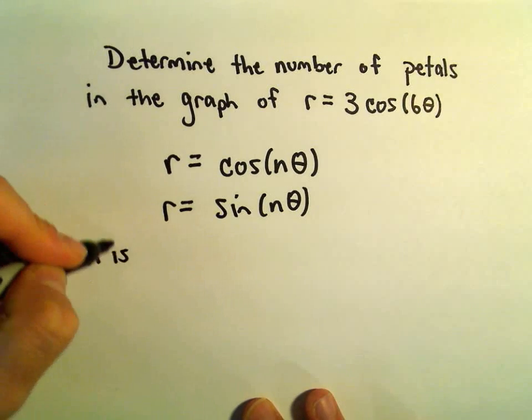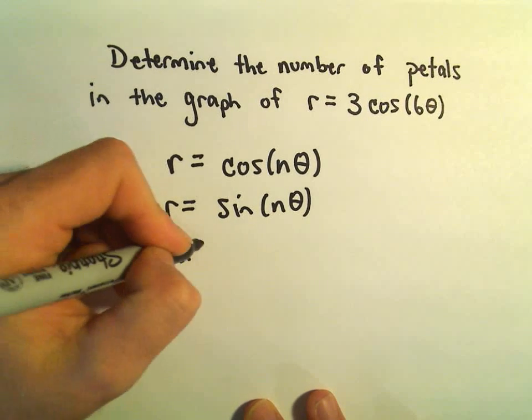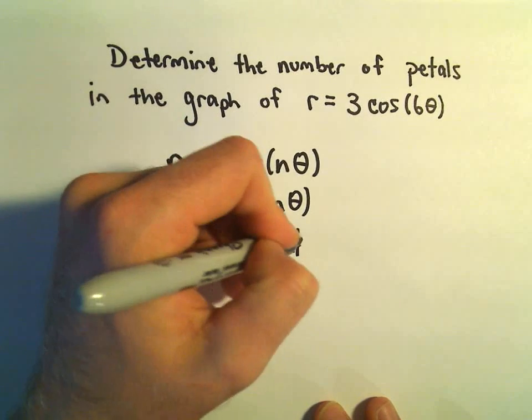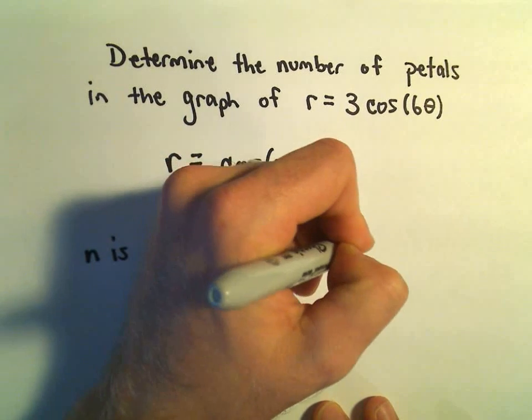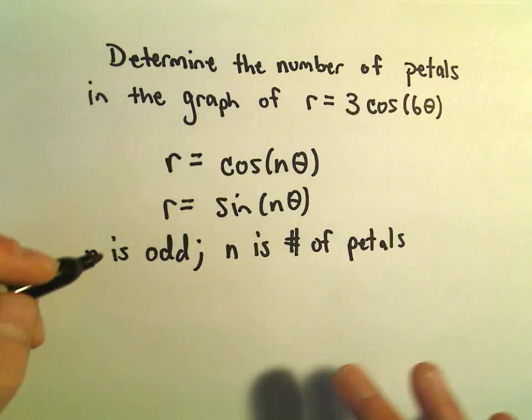If n is odd, then n is the number of petals. Okay, so we'll revisit that idea.